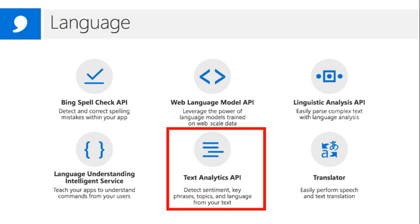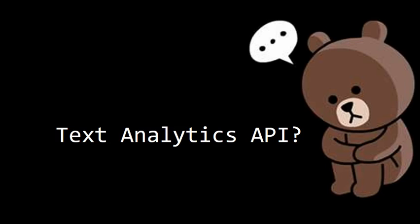The Text Analytics API falls under the language category in Cognitive Services. With the Text Analytics API in Cognitive Services, we can provide analysis of text received from the user — including detecting the emotion state, topic, and title of what the session is about. That means we can analyze the text to determine which language it is in and whether the text expresses a positive or negative sentiment.